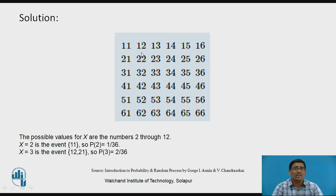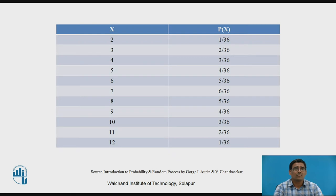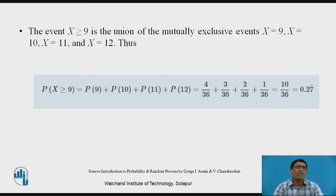Applying the basic definition of probability for each value of X, we construct the probability distribution table. P(X=2)=1/36, P(X=3)=2/36, P(X=4)=3/36, P(X=5)=4/36, P(X=6)=5/36, P(X=7)=6/36, P(X=8)=5/36, P(X=9)=4/36, P(X=10)=3/36, P(X=11)=2/36, P(X=12)=1/36. This completes the solution for part one.